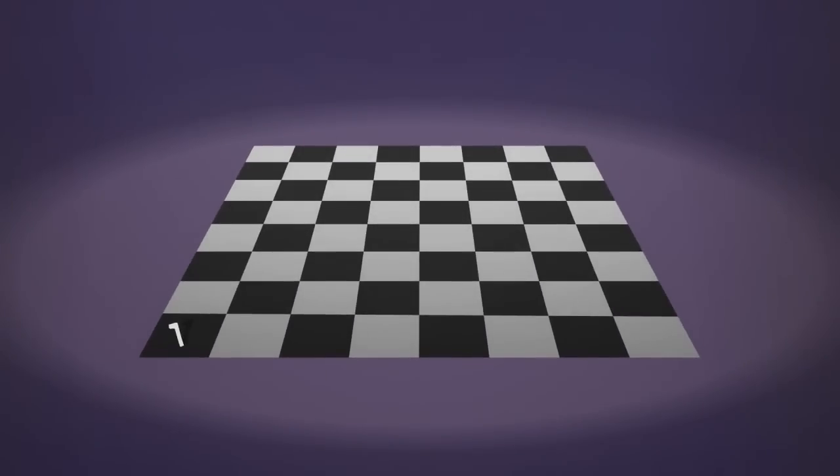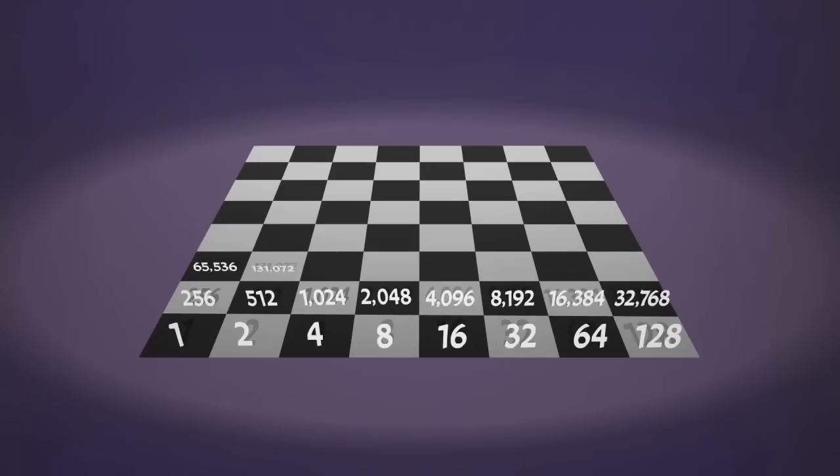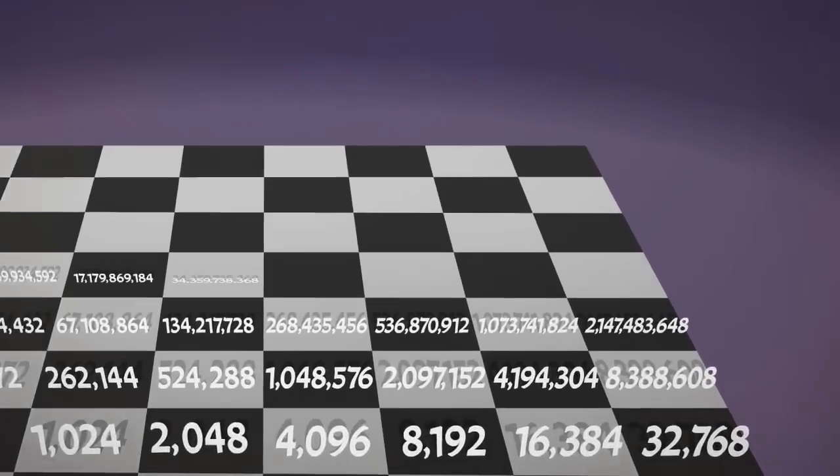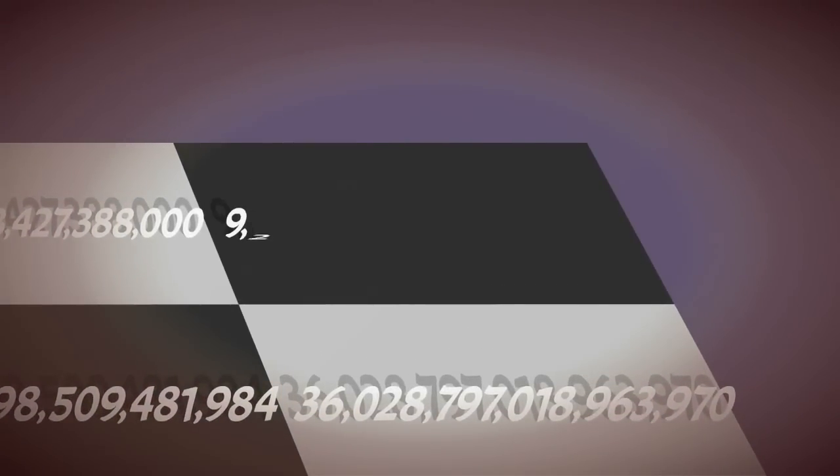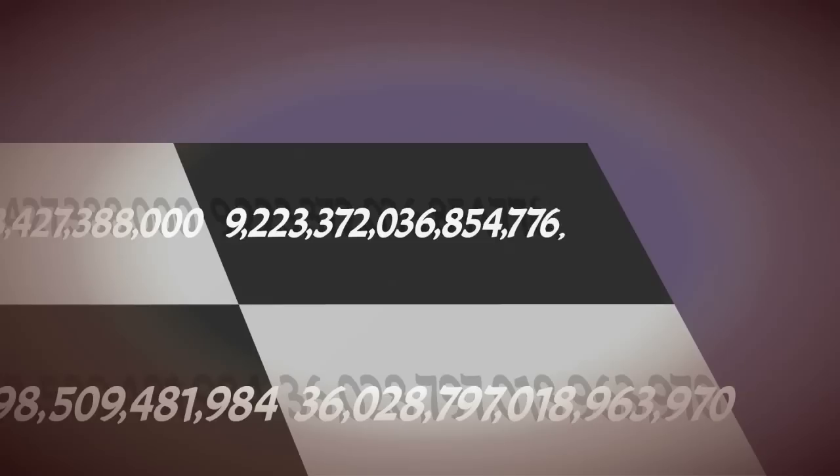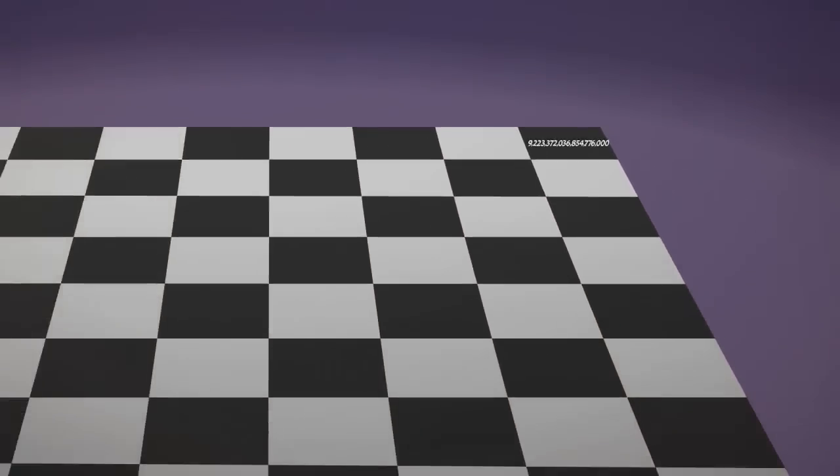If we place a single grain of rice on the first square of a chessboard, double this and place two grains on the second, double again and place four on the third, double again and place eight on the fourth and continue this way, putting on each square twice the number of grains than were on the previous one. By the time we reach the final square, we need an astronomical number of grains: nine quintillion, 223 quadrillion, 372 trillion, 36 billion, 854 million, 776 thousand grains. More grains than the human race has grown in the last 10,000 years.